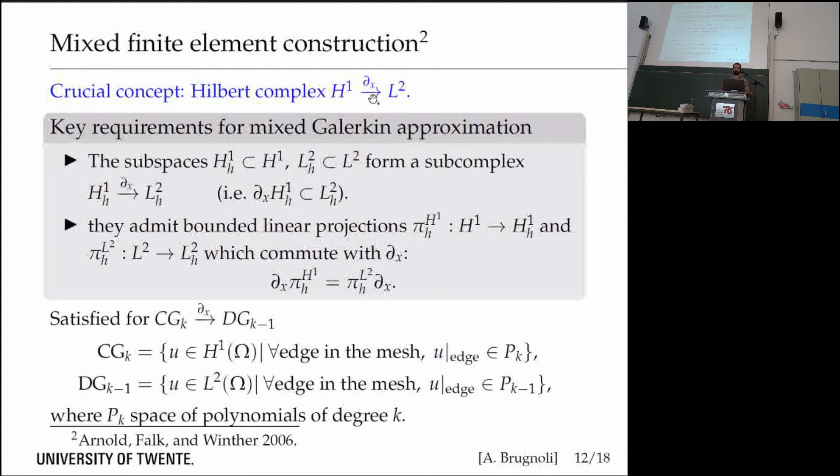The idea is that we have a Hilbert complex going from the H1 space to the L2 space. We have a couple of requirements for mixed Galerkin approximation where we take discrete subspaces of H1 and L2. These two subspaces need to form a subcomplex. When we take the derivative of the H1 space, we need to be in a subset of L2.